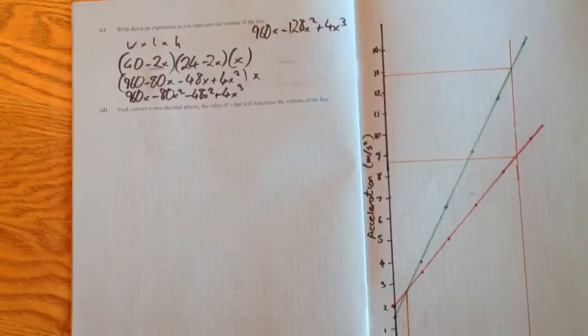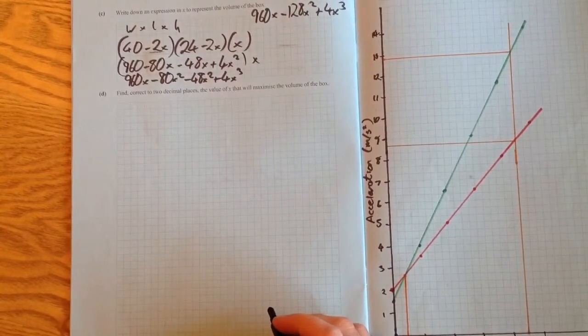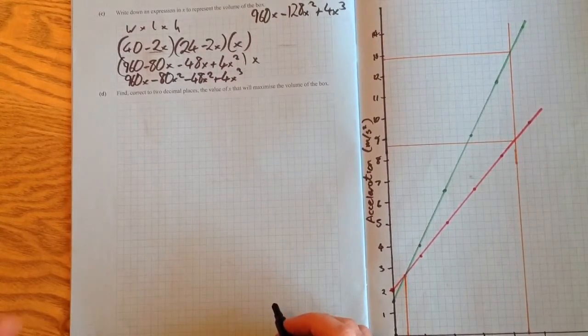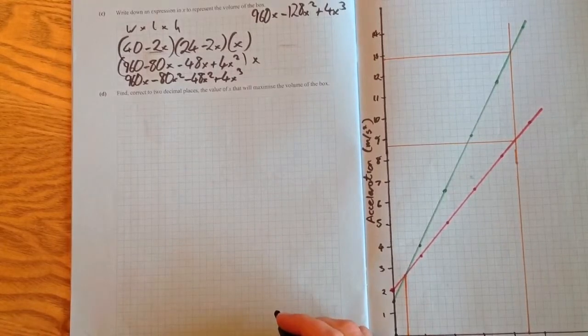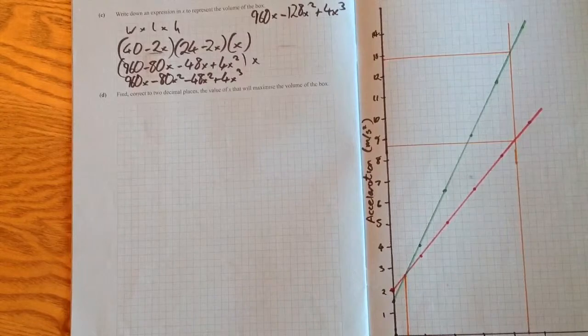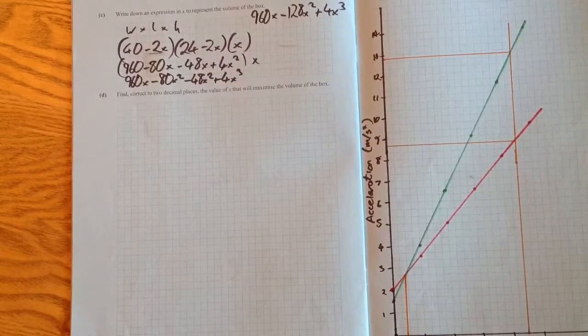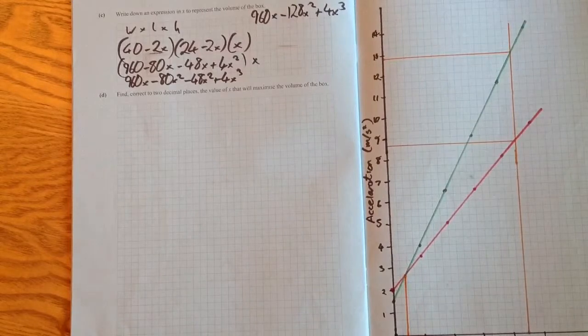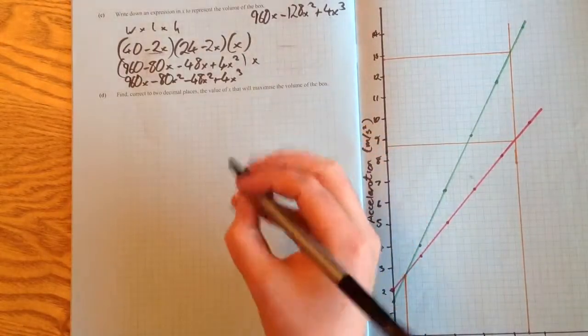Part d is a bit of a long one. It says find, correct to two decimal places, the value of x that will maximize the volume of the box. This is a calculus question. If you're looking for the maximum value, you differentiate first and let it equal zero.